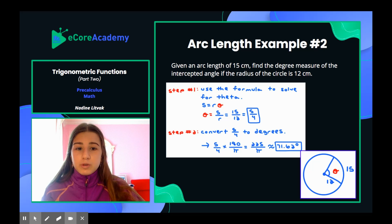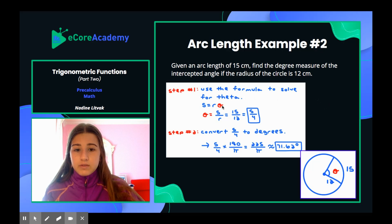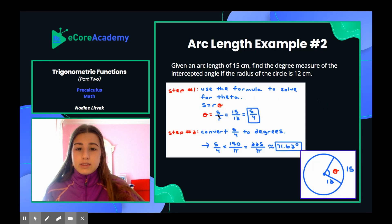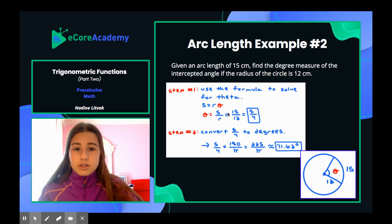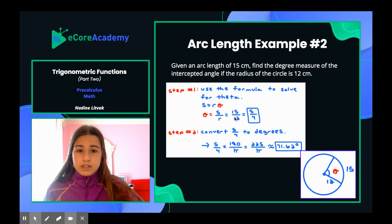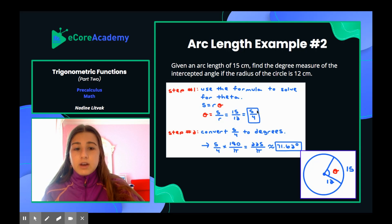First, use the arc length formula s equals r theta to solve for theta. Dividing both sides by r, you get theta equals s over r. They gave us an arc length of 15 and a radius of 12, so 15 divided by 12 reduces to 5 fourths. This is the radian measure.